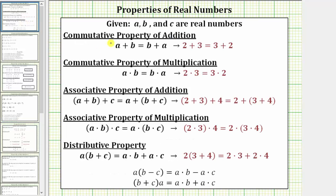First, the commutative property of addition is given as a plus b equals b plus a. When we change the order of a sum, we are using the commutative property of addition.